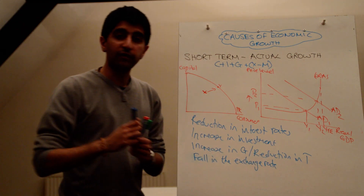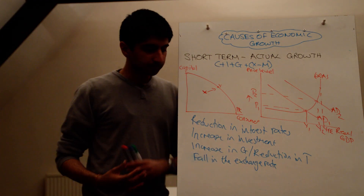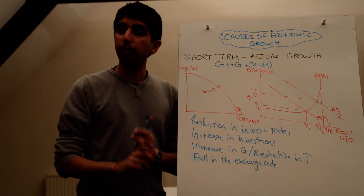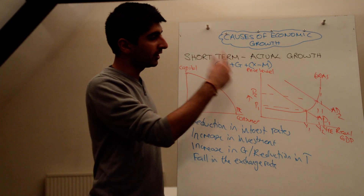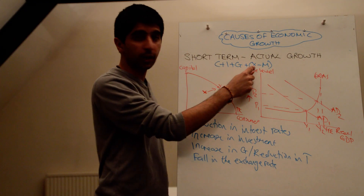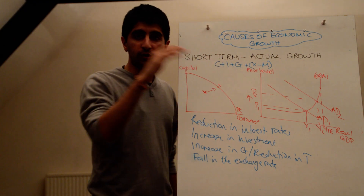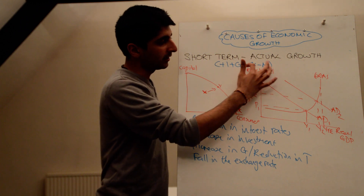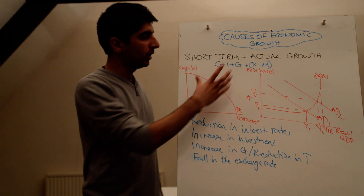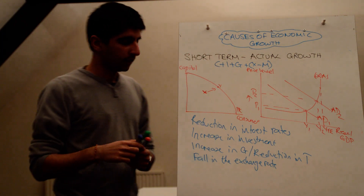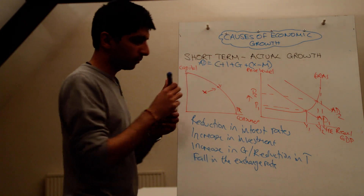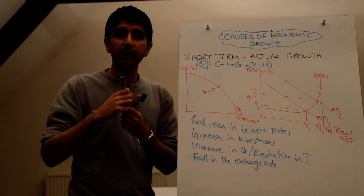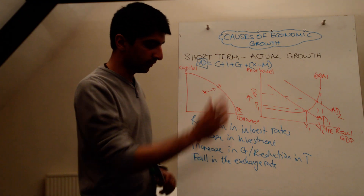Maybe there's been an increase in exports because of a fall in the exchange rate. As the exchange rate falls and the currency becomes weaker, exports become cheaper and imports become more expensive. As exports become cheaper, the demand for exports increases — X goes up — and the demand for imports goes down because they become more expensive, so the level of imports goes down. This bracket increases in value, which means aggregate demand increases. To summarise short-term growth: any increase in aggregate demand will cause short-term growth.